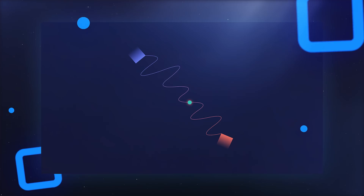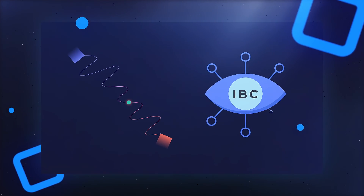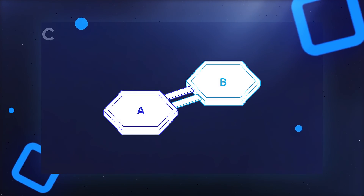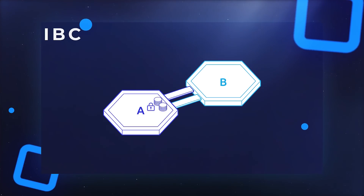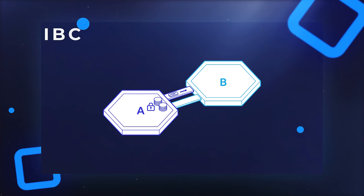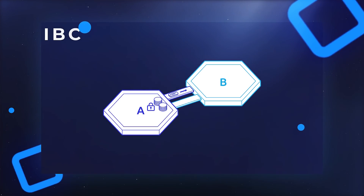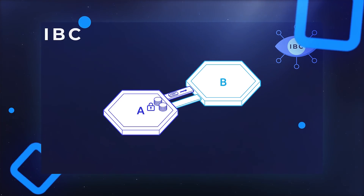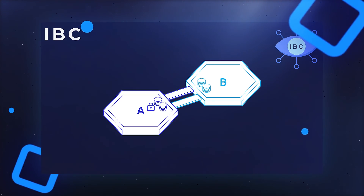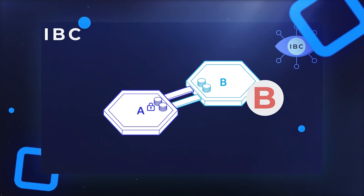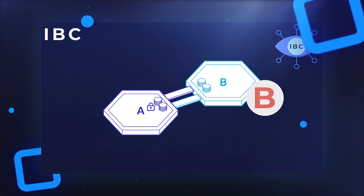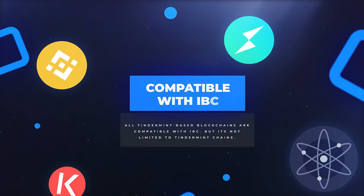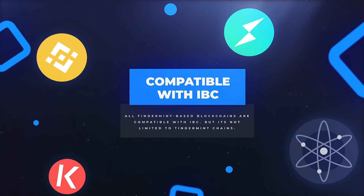When two chains are linked with IBC, the changes in each blockchain are closely monitored. For example, if you want to send 10 Chain A tokens to Chain B, IBC locks up 10 Chain A tokens in Chain A and sends a request to Chain B. Because Chain B was previously monitoring Chain A, it can validate the request. Then on Chain B, the equivalent of 10 Chain A assets is generated, but in the form of native Chain B tokens. Keep in mind that within a blockchain, only native tokens can exist.